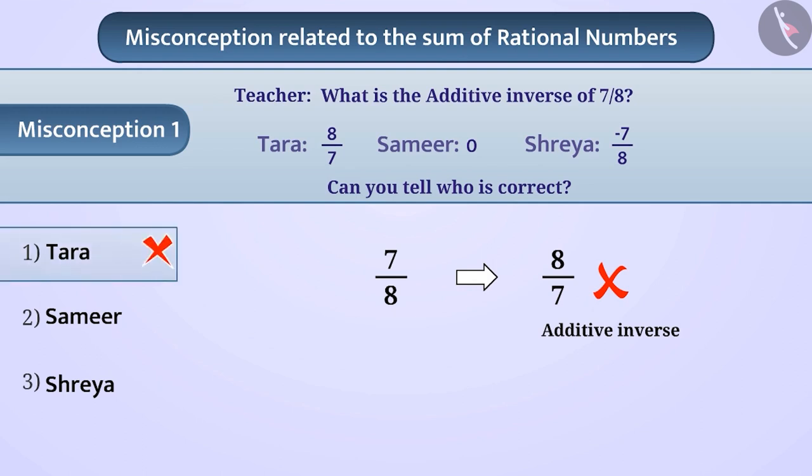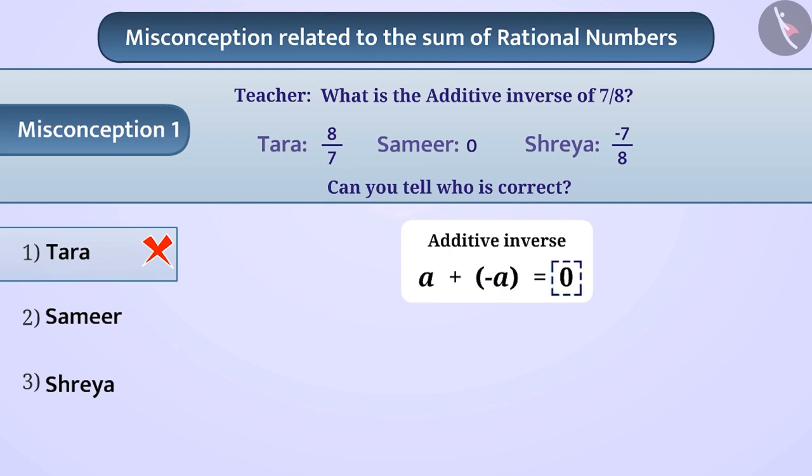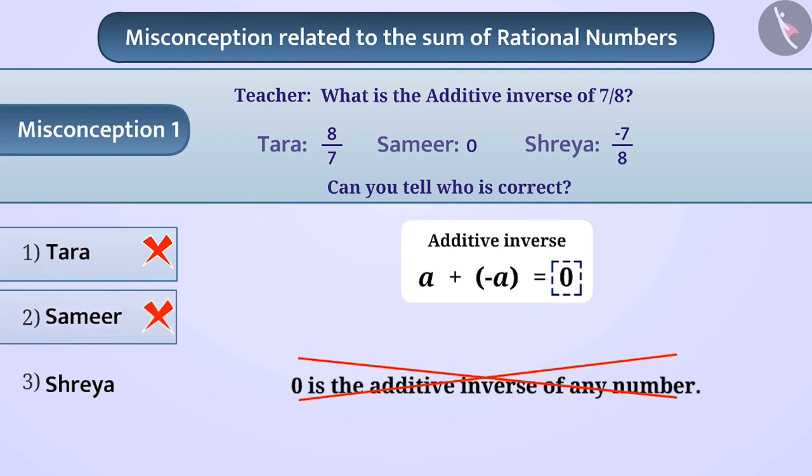That is, option 1 is the wrong answer. Similarly, some children memorize the explanation of additive inverse and do not understand its meaning. Due to the use of 0 in the interpretation, children often assume that 0 is an additive inverse of any number. But this is also not correct, so option 2 is also the wrong answer.